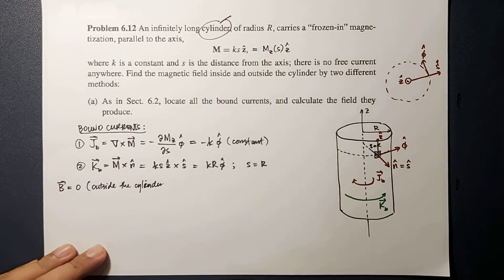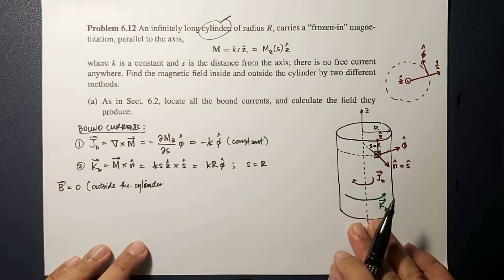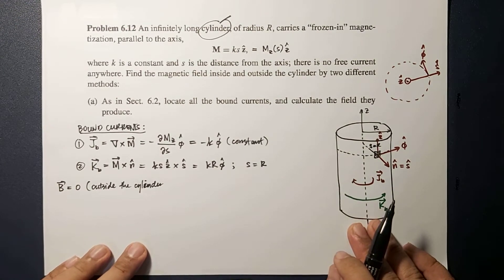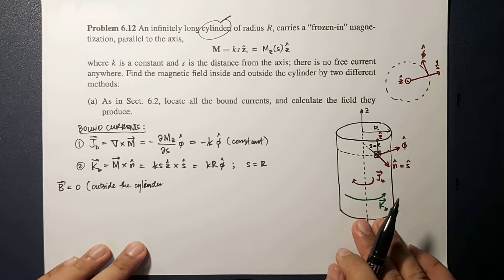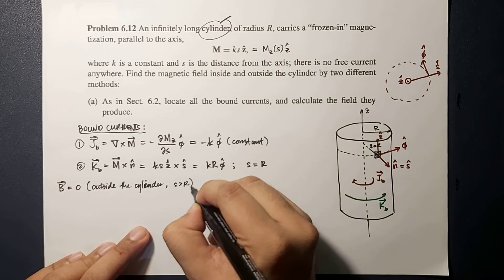And because of that, we can set that the magnetic field is zero when you're considering points outside the cylinder. Because as I mentioned earlier, we are now going to consider the cylinder to be a superposition of solenoids.